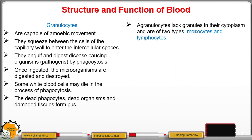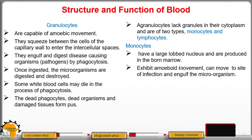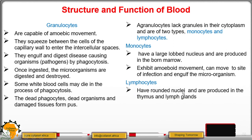Agranulocytes lack granules in their cytoplasm and include two types: monocytes and lymphocytes. Monocytes have a large lobed nucleus, are produced in the bone marrow, have amoeboid movement, and can move to the site of infection to engulf and digest microorganisms. Lymphocytes have rounded nuclei and are produced in the thymus and lymph glands.